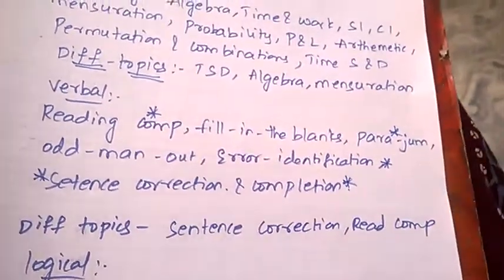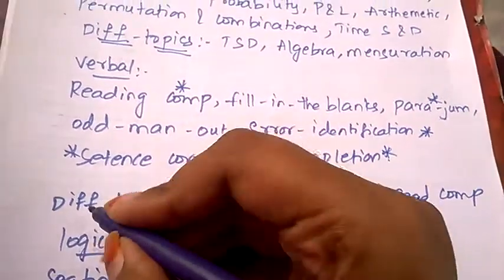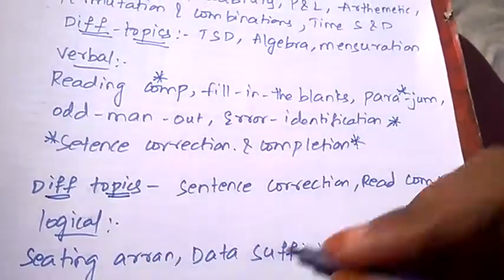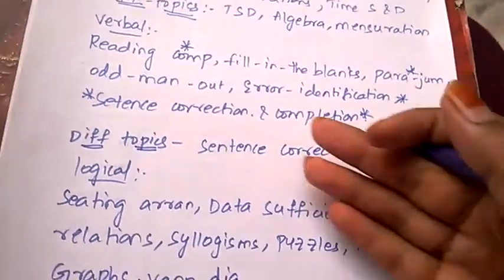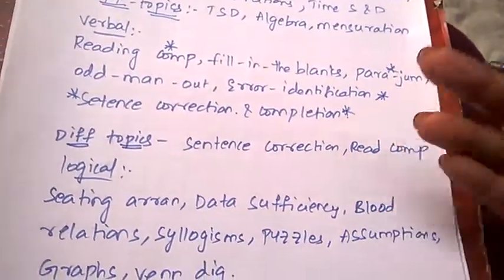Verbal difficult topics for CAT are sentence correction and reading comprehension. I already said on those topics you need to concentrate more and practice well.